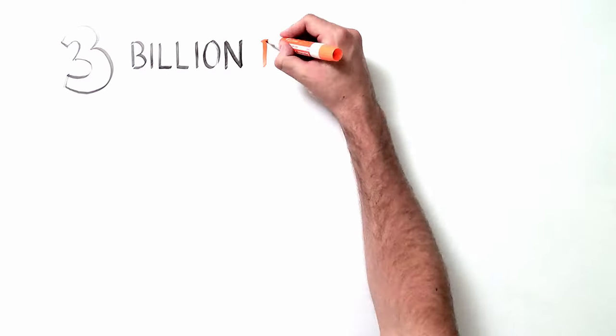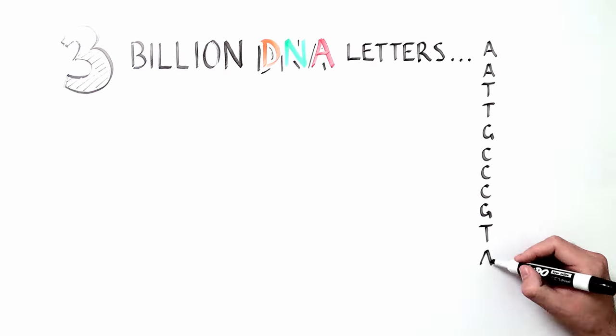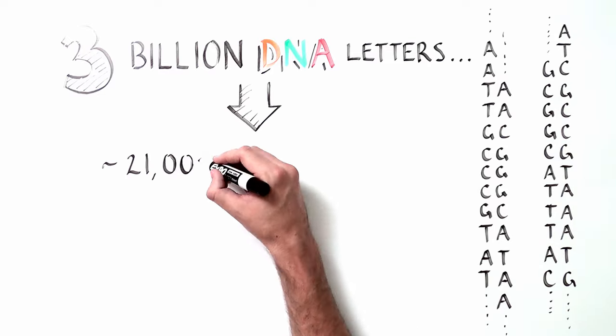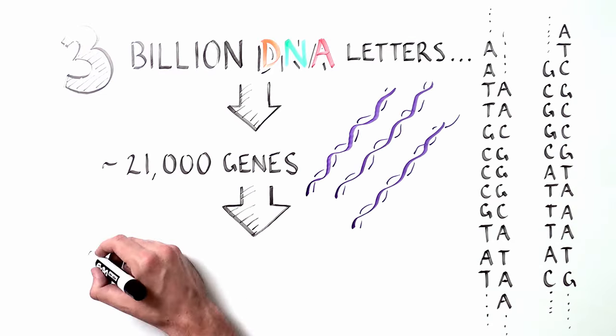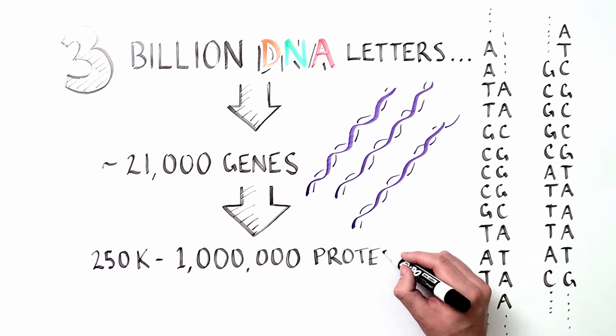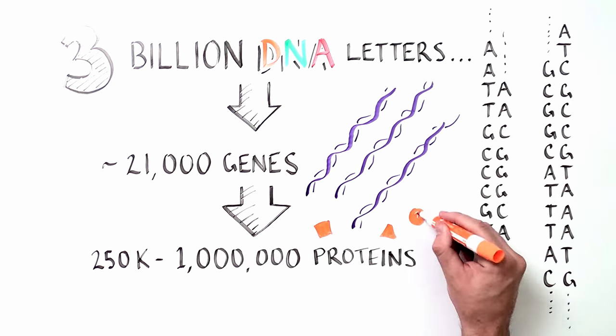The 3 billion DNA letters that make up the human genome encode roughly 21,000 genes. These genes in turn provide instructions for making an estimated 250,000 to 1 million distinct proteins.